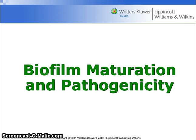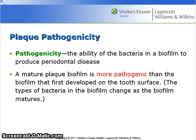Biofilm maturation and pathogenicity. Pathogenicity is the ability of the bacteria in a biofilm to produce periodontal disease. A mature plaque biofilm is more pathogenic than the biofilm that first developed on the tooth surface because the types of bacteria in the biofilm change as it matures. The thick biofilm at the gingival margin of these teeth has been present for several weeks. This mature biofilm is more pathogenic than a newly formed plaque biofilm. As the biofilm matures, it becomes colonized with large numbers of gram-negative periodontal pathogens.